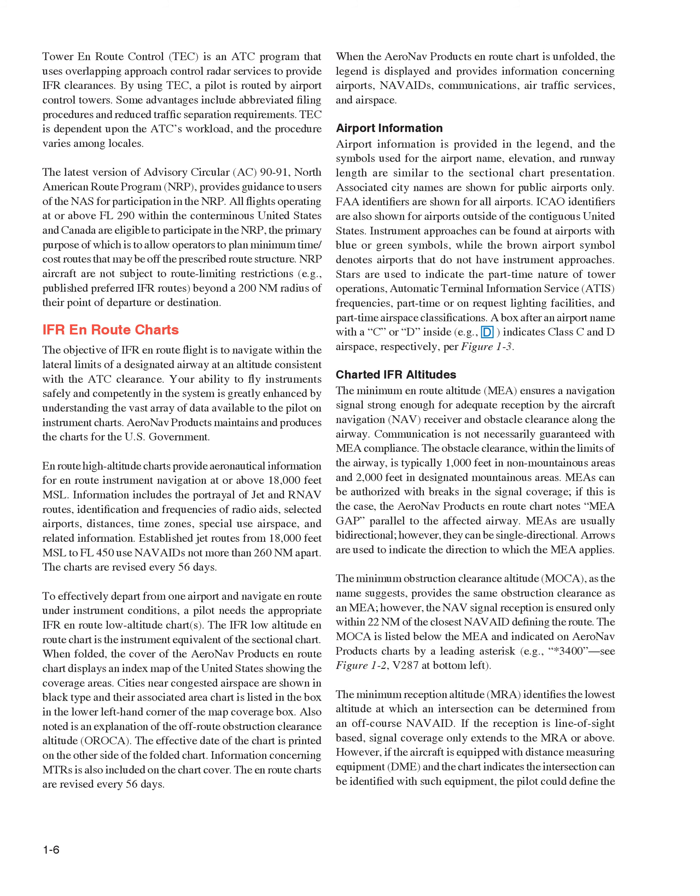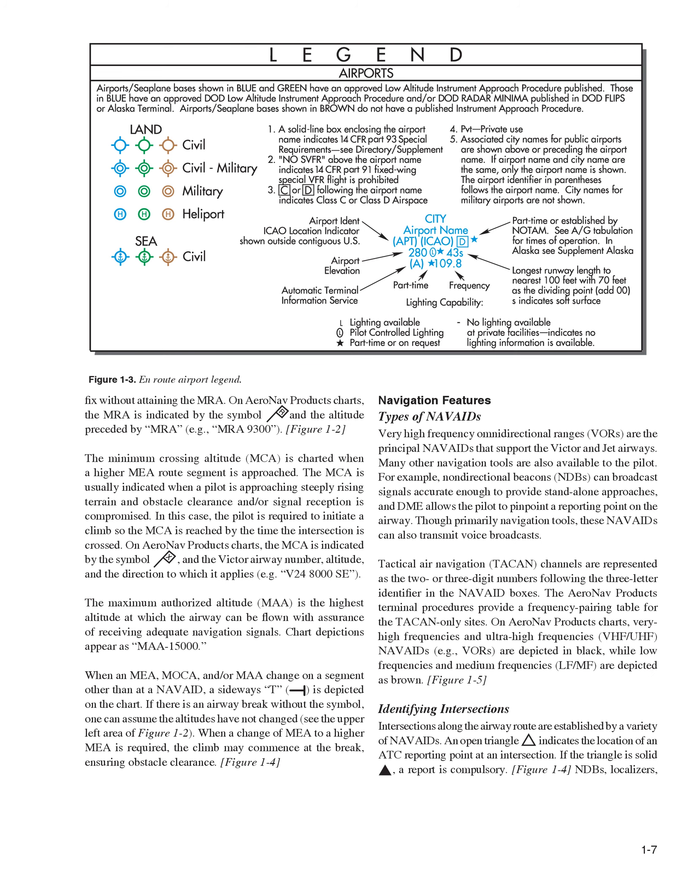Chart IFR altitudes: the minimum on-route altitude, MEA, ensures a navigation signal strong enough for adequate reception by the aircraft navigation, NAV, receiver and obstacle clearance along the airway. Communication is not necessarily guaranteed with MEA compliance. The obstacle clearance within the limits of the airway is typically 1,000 feet in non-mountainous areas and 2,000 feet in designated mountainous areas. MEAs can be authorized with breaks in the signal coverage, noted on the AeroNav Products on-route chart. MEAs are usually bi-directional; however, they can be single-directional. Arrows are used to indicate the direction to which the MEA applies. The minimum obstruction clearance altitude, MOCA, provides the same obstruction clearance as the MEA. However, the NAV signal reception is ensured only within 22 nautical miles of the closest NAVAID defining the route. The MOCA is listed below the MEA and indicated on AeroNav Products charts by a leading asterisk. The minimum reception altitude, MRA, identifies the lowest altitude at which an intersection can be determined from an off-course NAVAID.